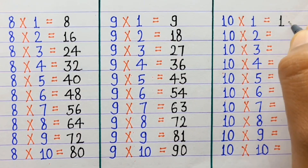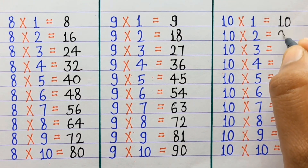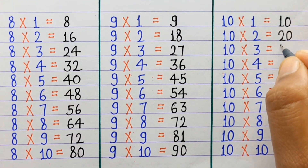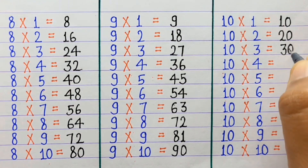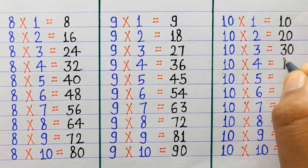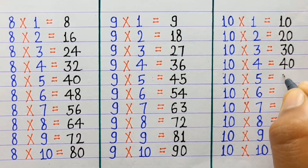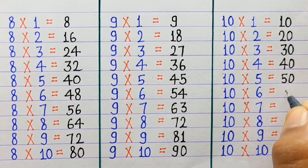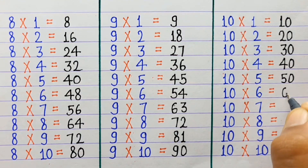10×1=10, 10×2=20, 10×3=30, 10×4=40, 10×5=50, 10×6=60.